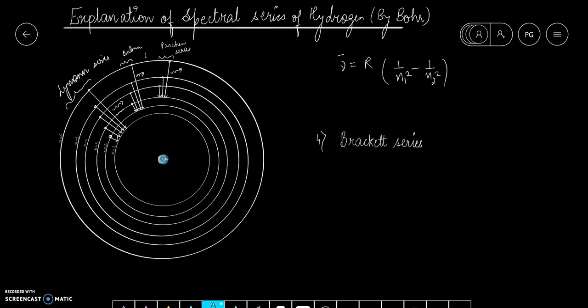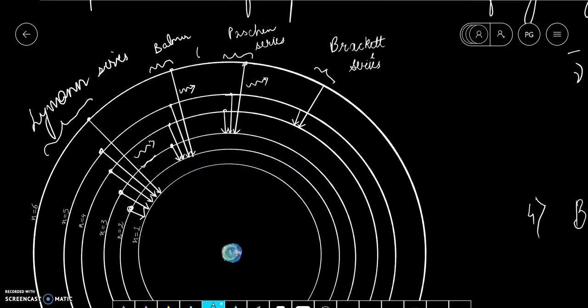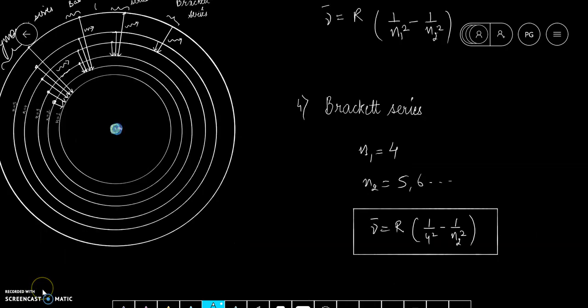Now let's talk about the fourth series, which is the Bracket series. This is showing the transitions for those electrons where the electrons are jumping to fourth orbit from the higher orbits. The corresponding wavelengths of the photons correspond to the Bracket series. This is the wave number of all those photons corresponding to the Bracket series, and this comes in the infrared region of the electromagnetic spectrum.